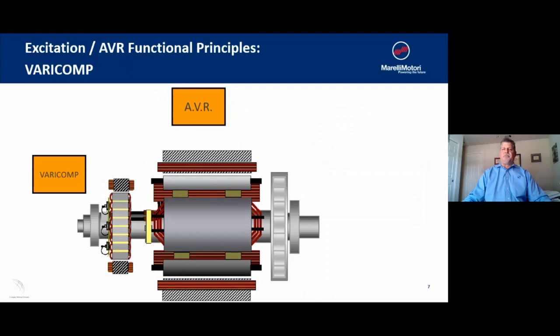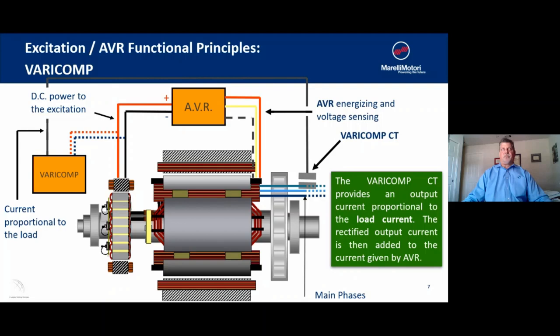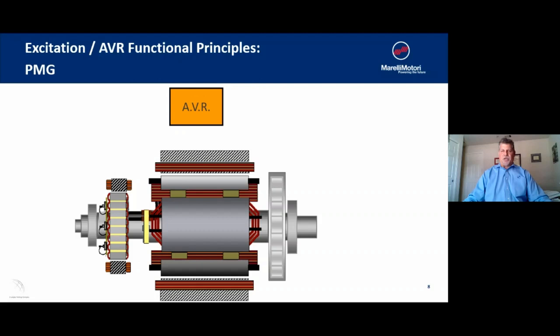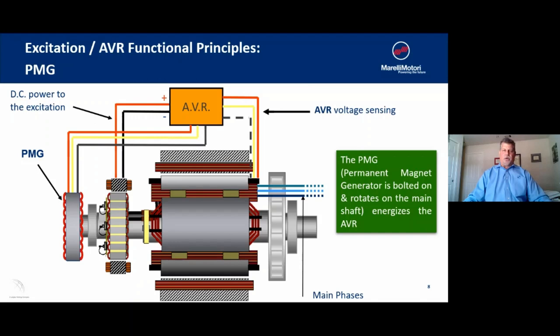We also use what's called a Veracomp device — for lack of a better term, an overboost system that uses a CT to sense the output current, feeds that back into the Veracomp, rectifies that signal, and adds it to the signal to the AVR. These devices are typically used when you have large AC motors connected to the unit. Last, permanent magnet generators bolt onto the end of the main rotor; because of their residual magnetism, they supply a very strong and clean signal directly to the AVR and are primarily used when you require 300% overload capability on the alternator.